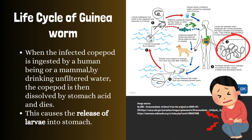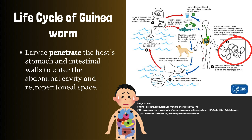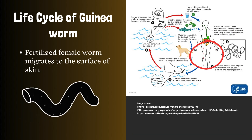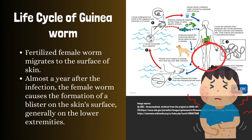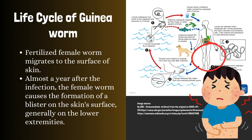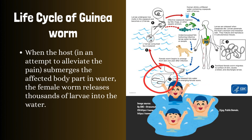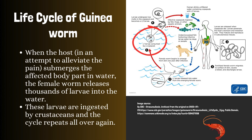This causes the release of larvae into the stomach. Larvae penetrate the host's stomach and intestinal walls to enter the abdominal cavity and retroperitoneal space. There, they mature and reproduce by mating of male and female adult worms. The fertilized female worm migrates to the surface of the skin. Almost a year after the infection, the female worm causes the formation of a blister on the skin surface, generally on the lower extremities. When the blister ruptures, the female worm slowly emerges from the skin. Over the course of several days or weeks, this stage causes severe pain and irritation to the host. When the host, in an attempt to alleviate the pain, submerges the affected body part in water, the female worm releases thousands of larvae into the water. These larvae are ingested by crustaceans, and the cycle repeats all over again.